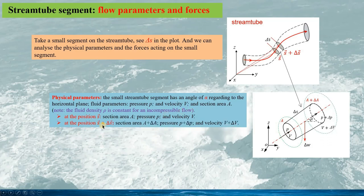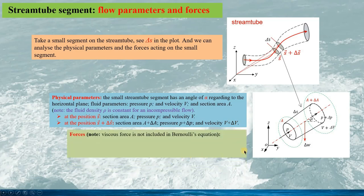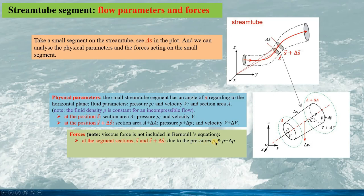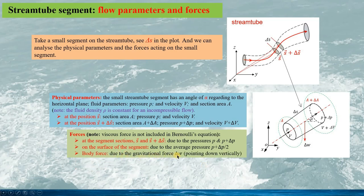At the section S plus delta S, the section area becomes A plus delta A, the pressure is p plus delta p, and the velocity is v plus delta v. If we consider the forces acting on the segment — for Bernoulli's equation the viscous force is not included — we can see at the segment sections S and S plus delta S, the force due to the pressure p and p plus delta p, and on the surface of the segment due to the average pressure p plus half delta p, and the body force due to the gravitational force delta w pointing vertically downward.